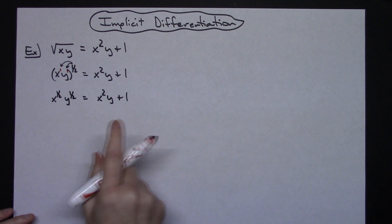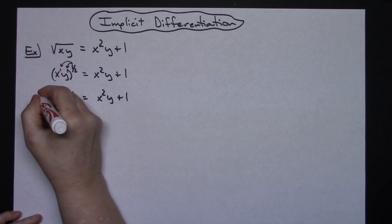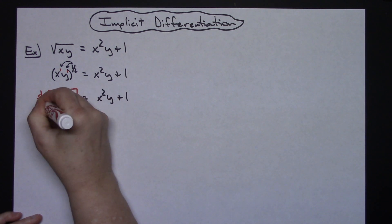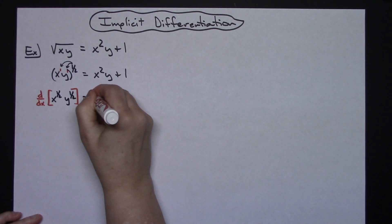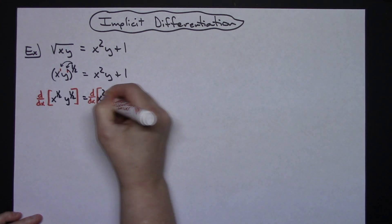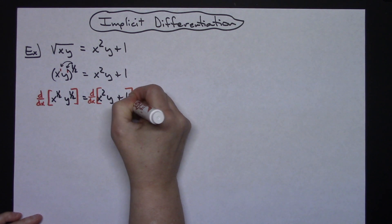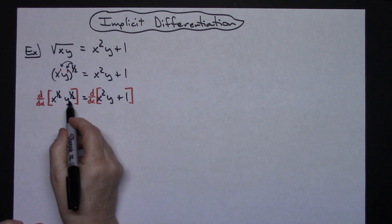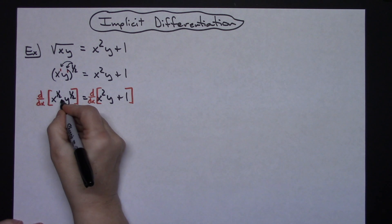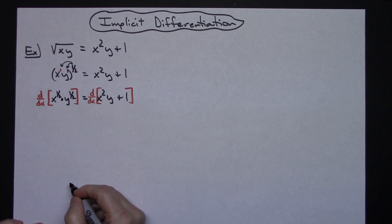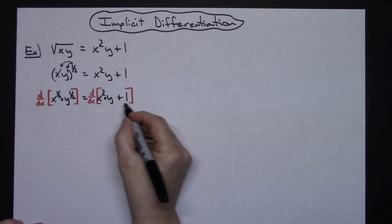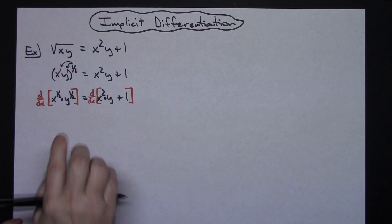At this point I want to take the derivative of both sides. I'm going to add the d/dx notation to the left hand side and to the right hand side — that's just saying now I'm ready to start taking the derivative. On the left side I have product rule, and on the right side I also have product rule with that plus 1 there.